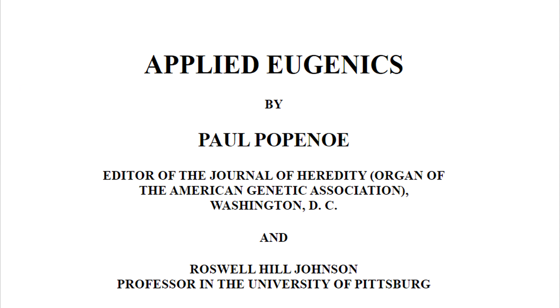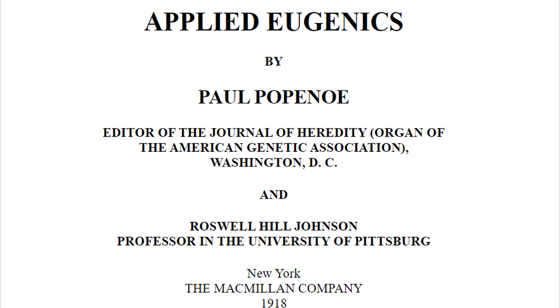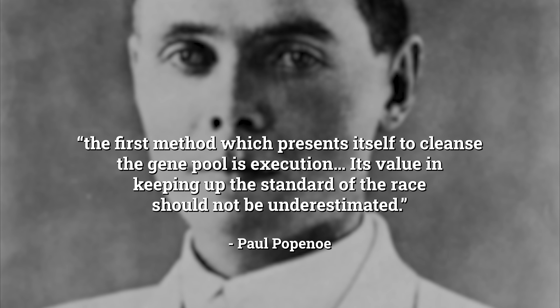Eugenics led American policymakers to acts even more atrocious than forced sterilization. A 1911 Carnegie report explored 18 different potential methods for removing defective genetic attributes, and proposed euthanasia at number eight. One influential American textbook, Applied Eugenics by Paul Popenoe of the American Eugenics Society, argued that the first method which presents itself to cleanse the gene pool is execution, and that its value in keeping up the standard of the race should not be underestimated. These ideas were actually put into practice in some states — one mental institution in Lincoln, Illinois, fed its patients milk infected with tuberculosis in order that the genetically weak among them would be killed off.